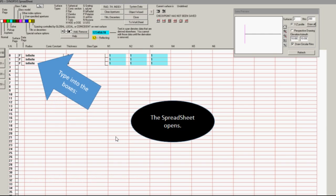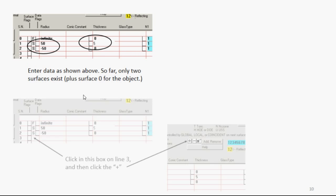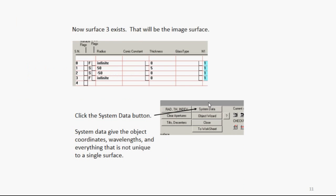Now you're going to type some data into the boxes. You're going to type the radii of 50 and minus 50, and the thickness of 5. So far there's only two surfaces defined, plus the object at surface 0. We need to make surface 3 exist, so you click on the line for surface 3, and then click the little plus sign. Now surface 3 exists, and that's going to be the image surface.